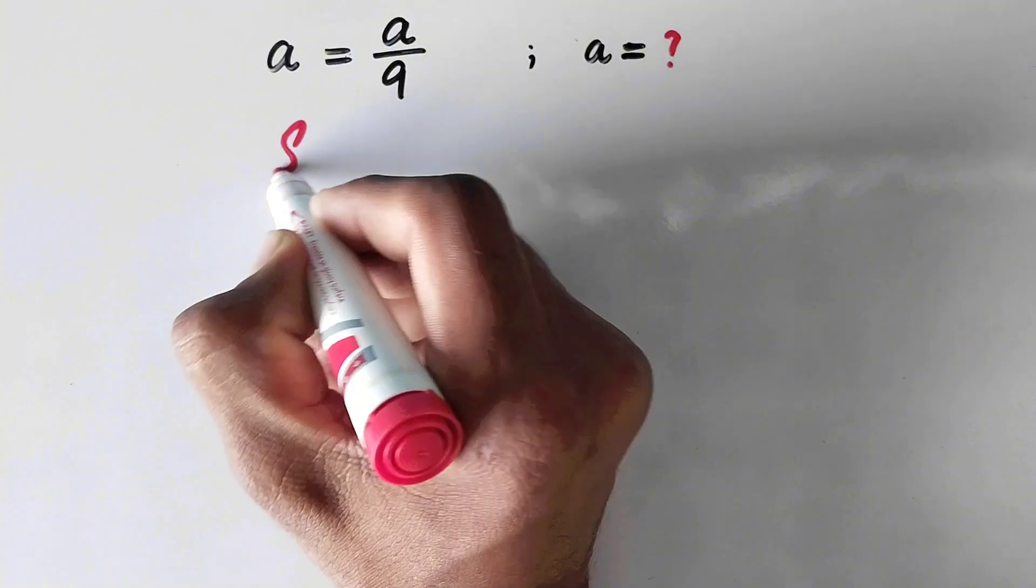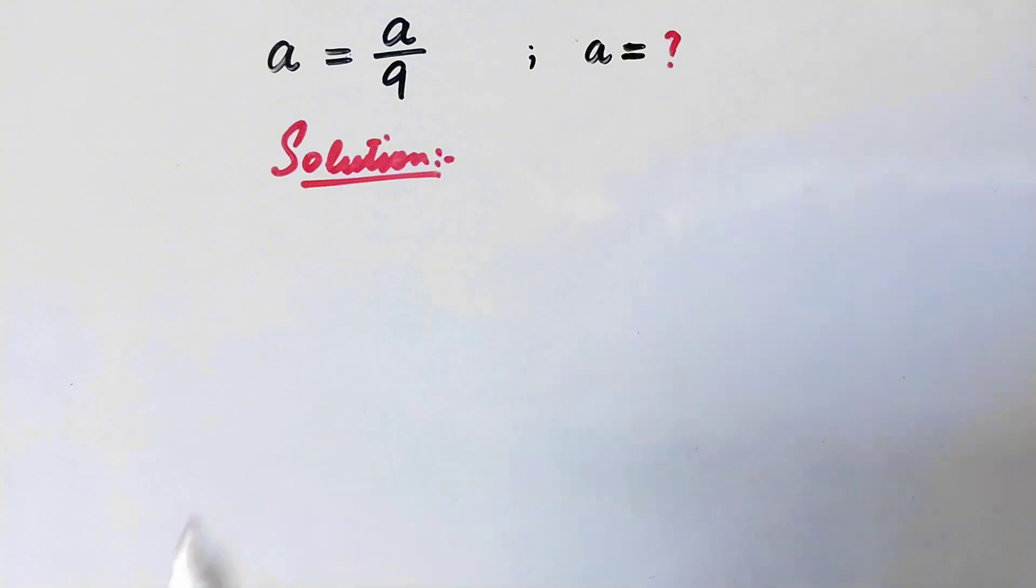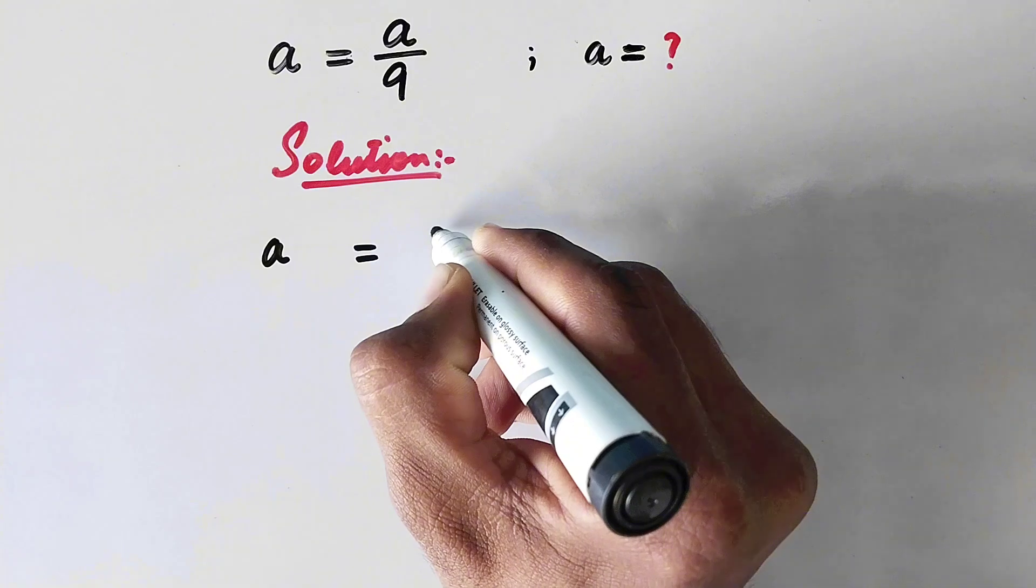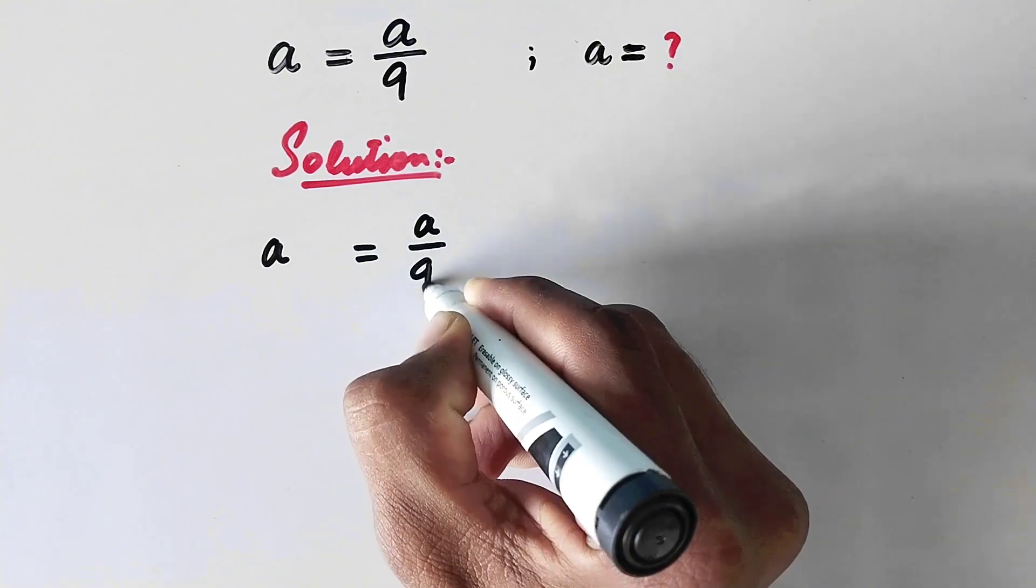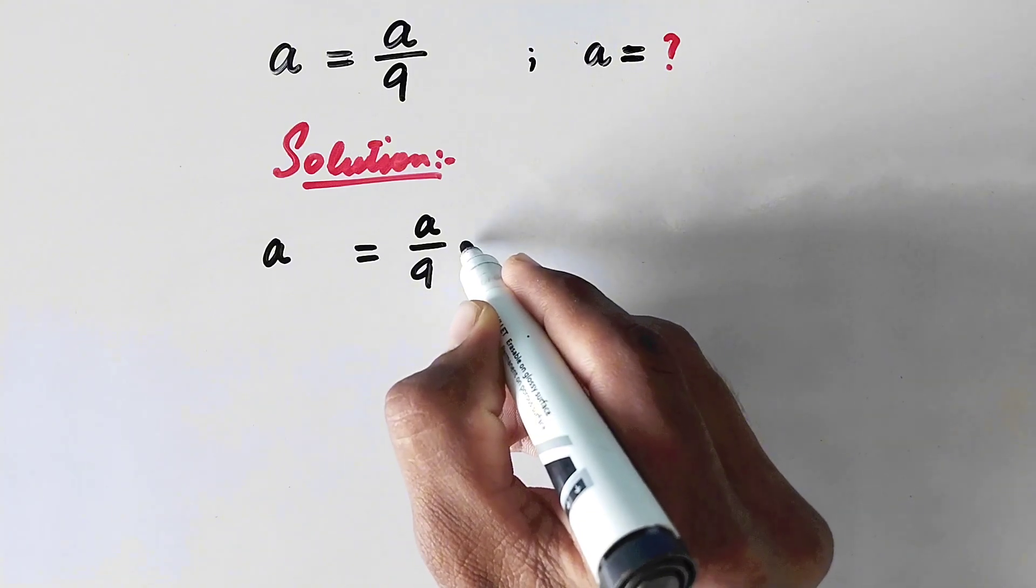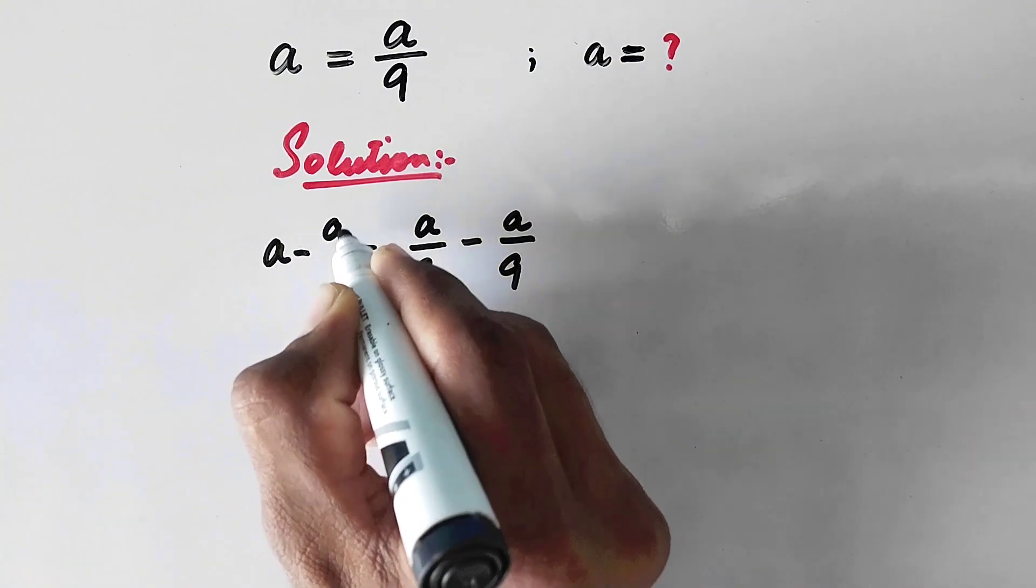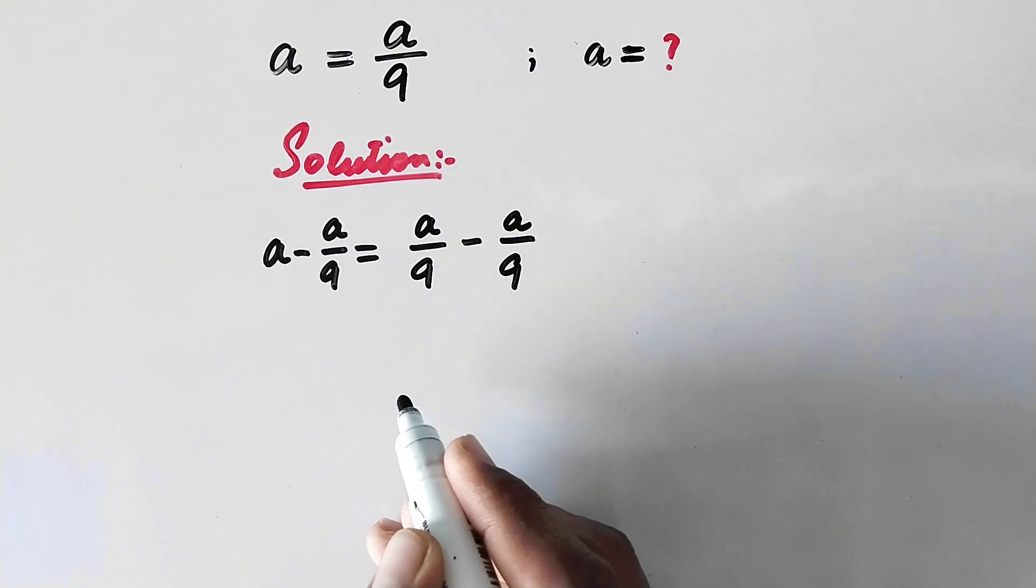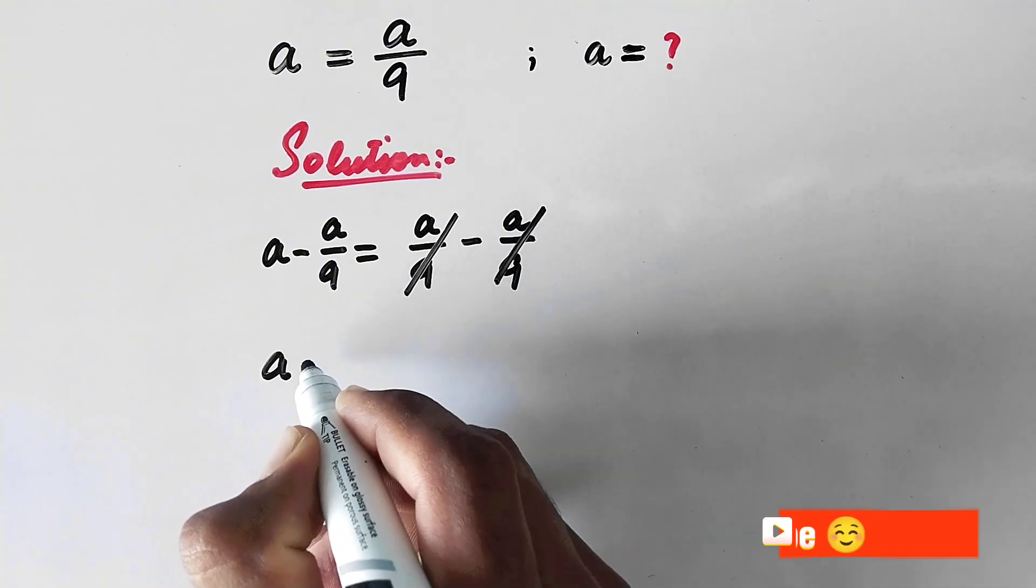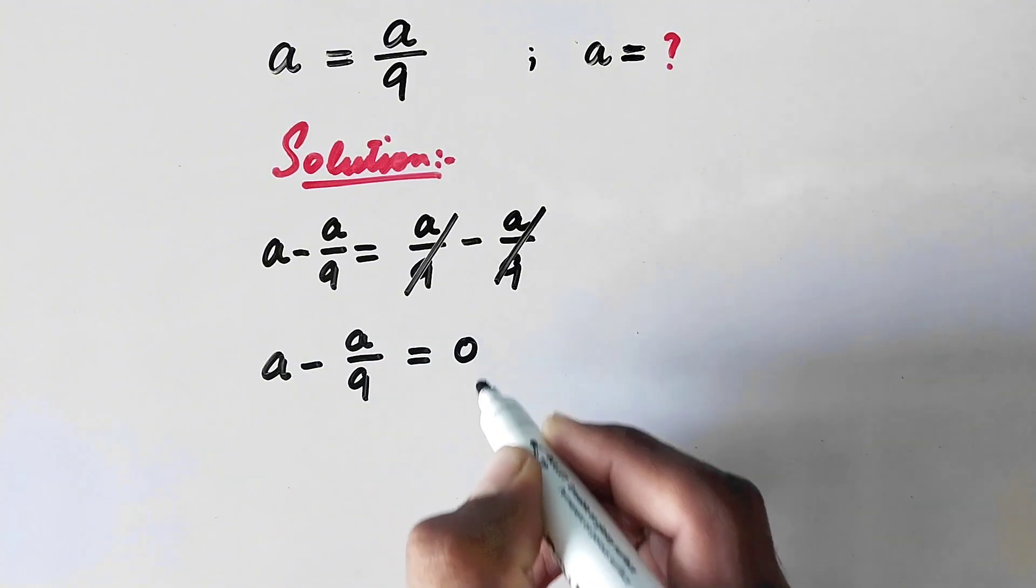So let us see its solution. In the first step we will write a equal to a over 9 and we will subtract the fraction a over 9 from both sides. So now here this fraction will be cancelled by this fraction.